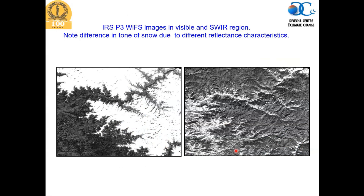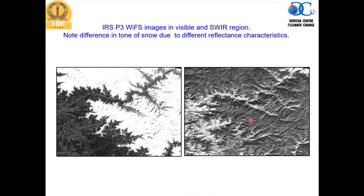If we look at actual satellite imagery — this is IRS P3 WIFS imagery in the visible and SWIR region — you can notice the difference in tone of snow due to different reflectance characteristics. Snow has very high reflectance and appears white in the visible part of the spectrum, and the same snow in the SWIR region has very low reflectance, clearly indicated by the tone of the satellite images.